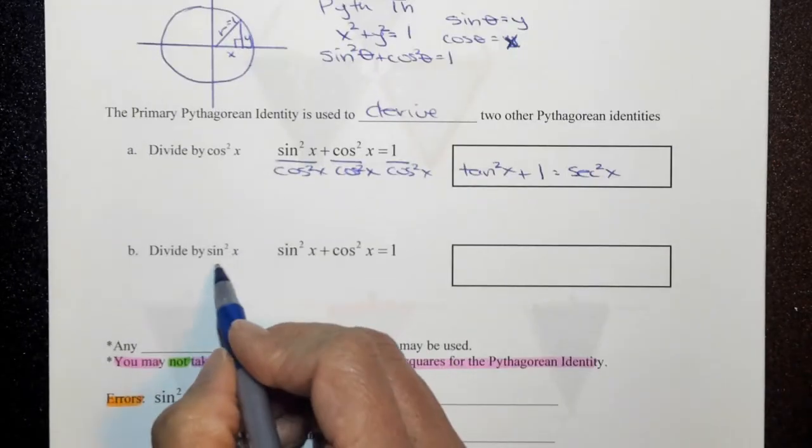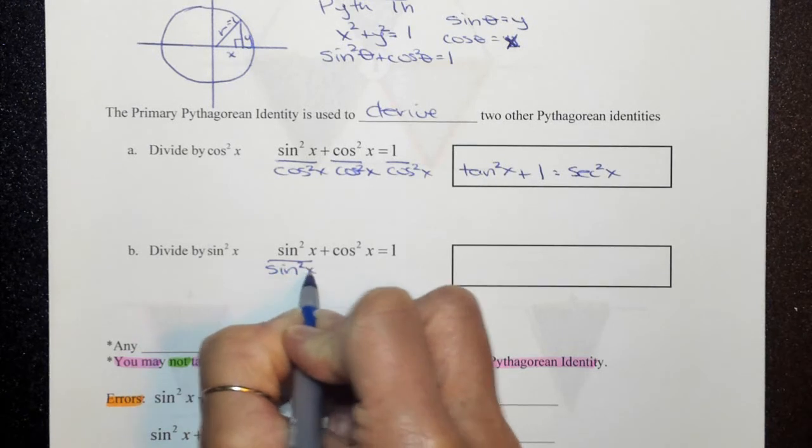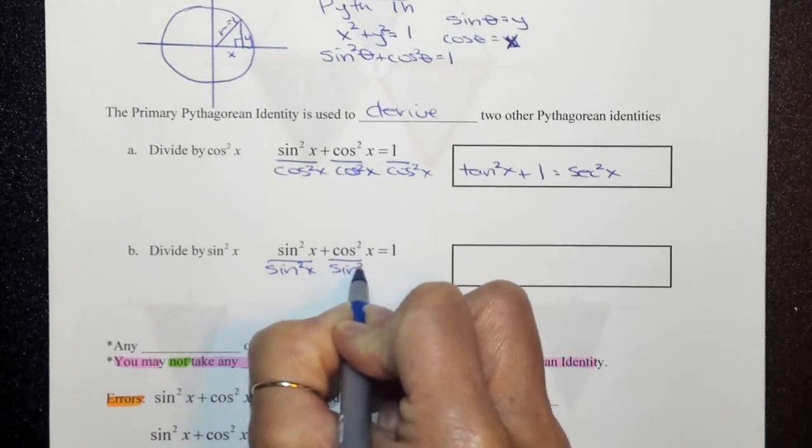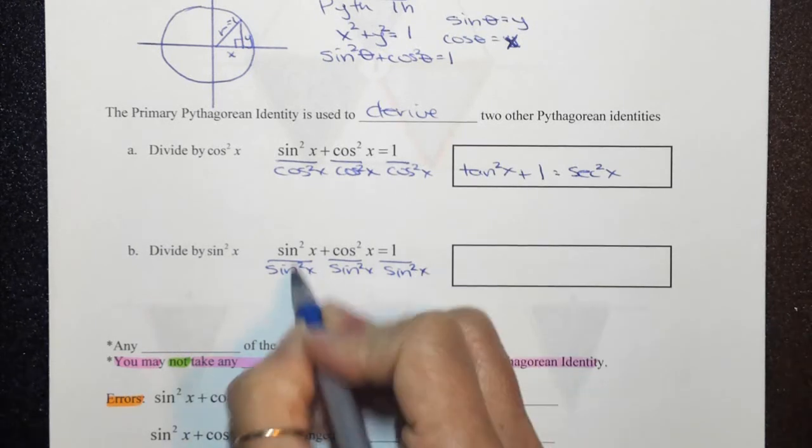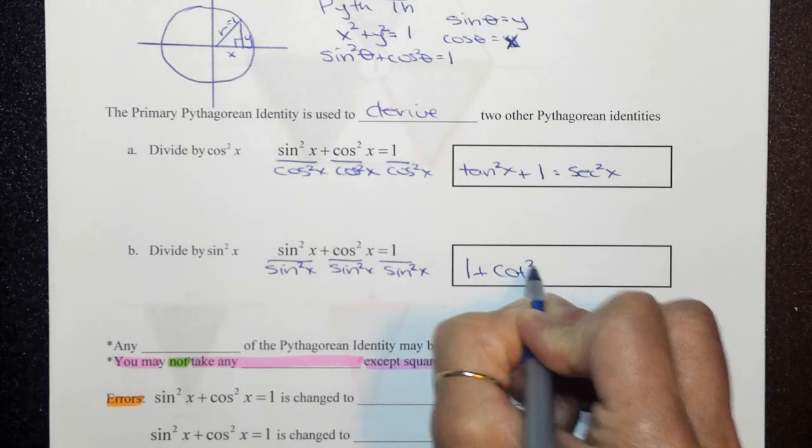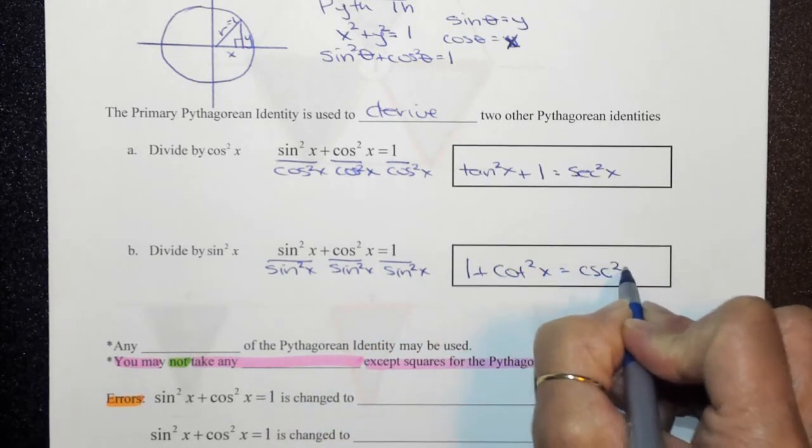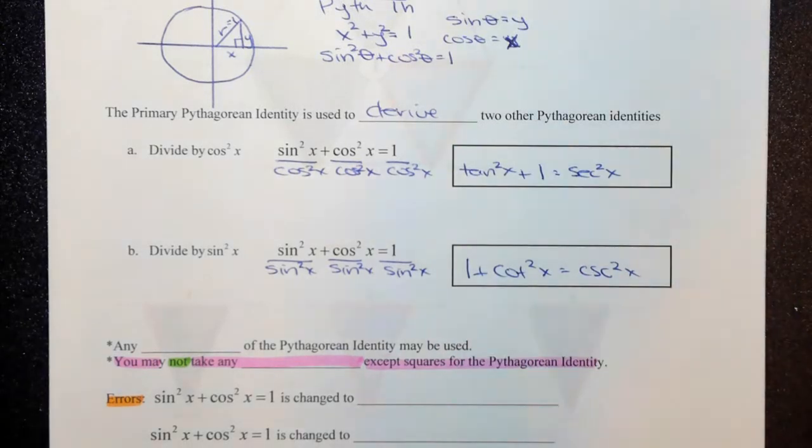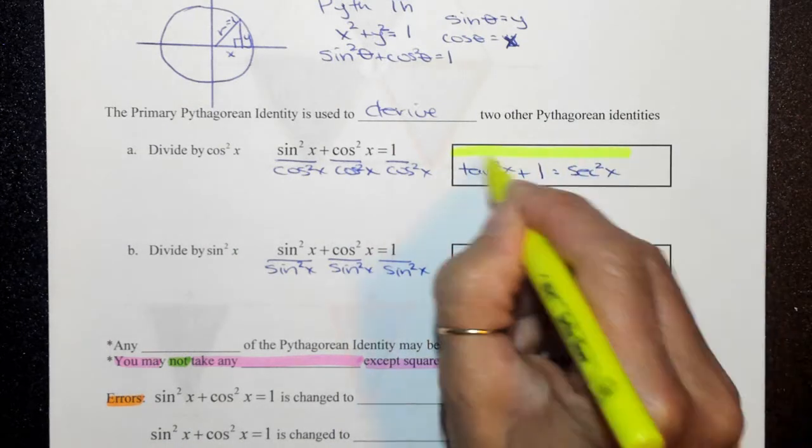And then here if we were to divide by the sine squared, this becomes 1 plus, again, quotient identity is cotangent squared is equal to reciprocal identity, cosecant squared of x. So these also were two that you do need to know, but they are derivatives of the original.